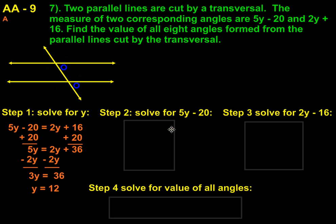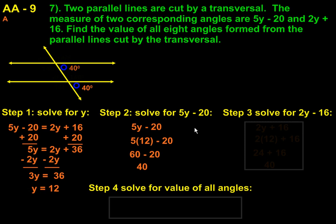If we plug 12 back into the equations, we have 5y minus 20, 5 times 12 minus 20, 60 minus 20, or 40. So that tells me that one of these is equal to 40. And again, I know the other one has to be equal to 40 because they're congruent. If we look at the math to prove it, you can see we have 2 times 12 plus 16. 24 plus 16 gets us 40.